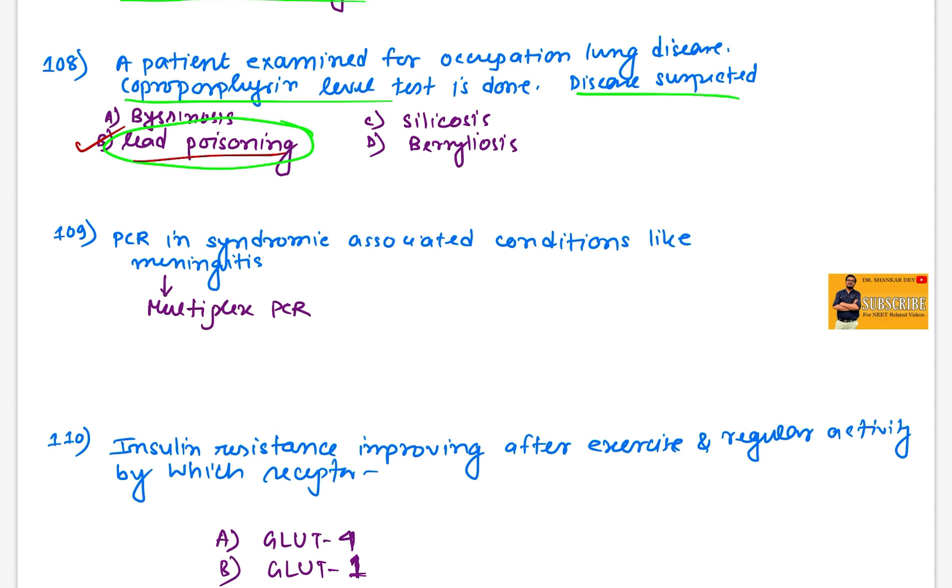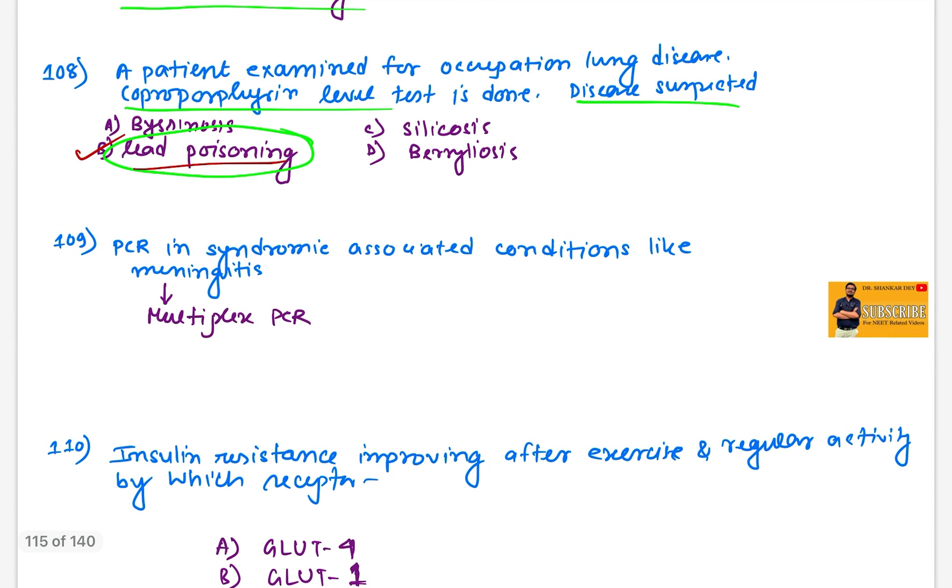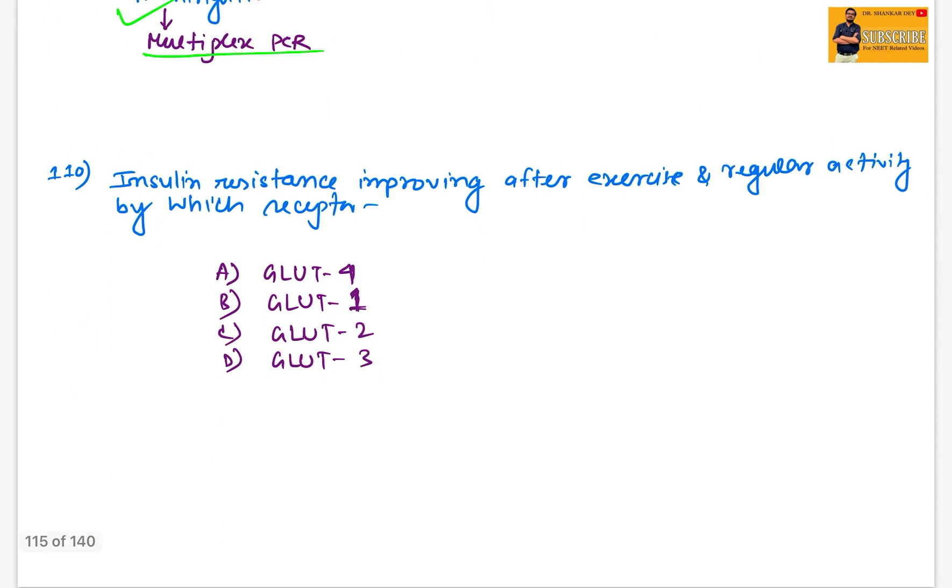Question 108: A patient examined for occupational lung disease, coproporphyrin level was checked and disease suspected. It is nothing but lead poisoning. In lead poisoning there may be increased coproporphyrin level.